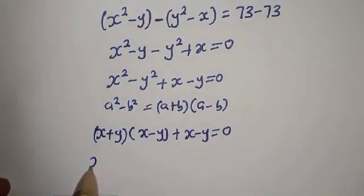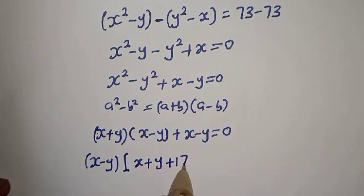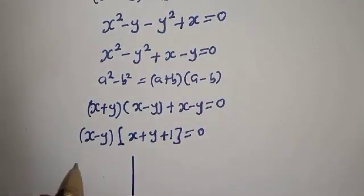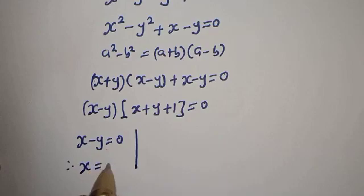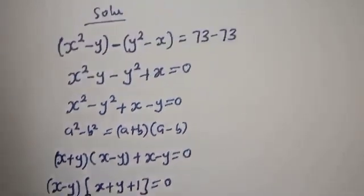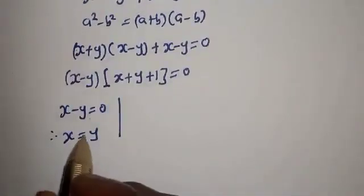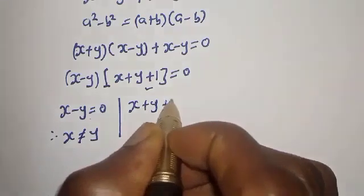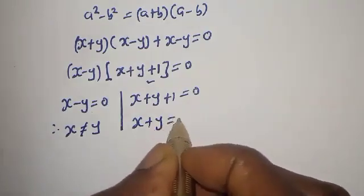So this can be written as (x plus y)(x minus y) plus (x minus y) equals 0. From here, (x minus y) is common — let's bring it out: (x minus y)(x plus y plus 1) equals 0. There are two cases. The first case is x minus y equals 0, meaning x equals y, but we said x is not equal to y, so we discard that case.